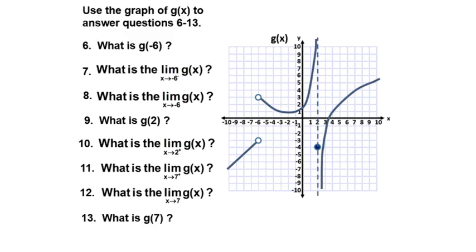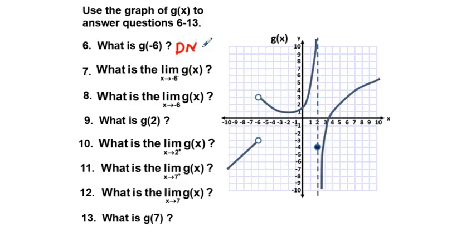Problems six through thirteen involve using this graph of g of x. First, what is g of negative six? Going to x equals negative six on the x-axis, we see a hole above and a hole below — the function is not defined at x equals negative six. So g of negative six does not exist.